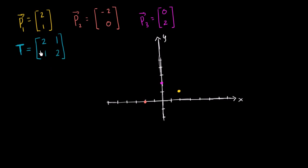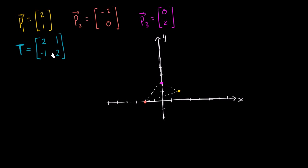We've already used a transformation matrix to transform one point. What I want to do in this video is transform a series of points. I have these position vectors P1, P2, and P3, plotted right over here. You could imagine them to be vertices of a triangle that looks something like this — one side, another side, and another side. What I'm curious about is what happens if I transform these three points? Like the last video, I could apply this transformation matrix separately to each of them to see what they transform into.